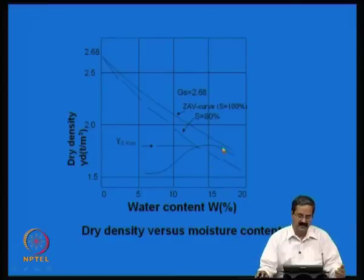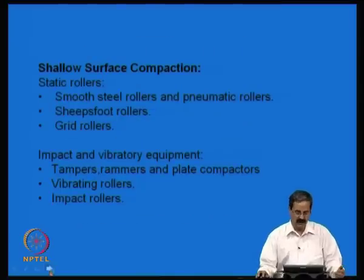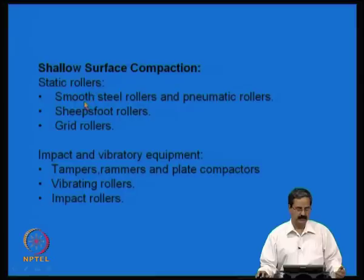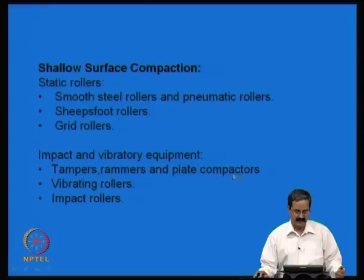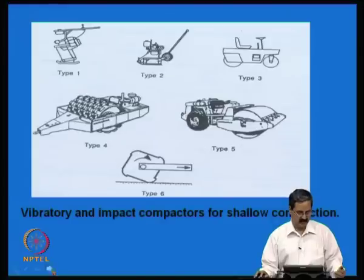Another plot shows that the degree of saturation at the optimum lies somewhere between 80 to 100 percent. To achieve compaction in the field, a number of techniques are used: static rollers including smooth steel rollers, pneumatic rollers, sheep's foot rollers, and grid rollers. One can also use impact and vibratory equipment such as tampers, rammers, plate compactors, vibrating rollers, and impact rollers. Varieties of equipment are possible, including road rollers, sheep's foot rollers, drum rollers, and impact loaders.